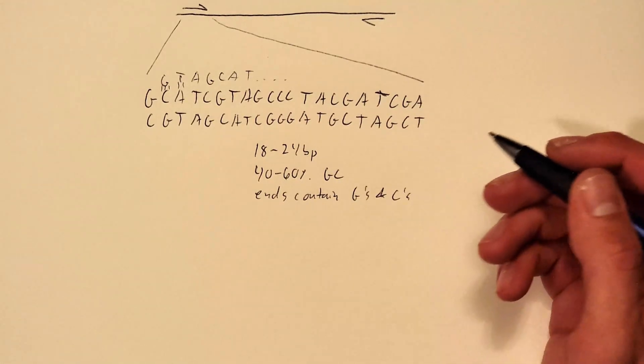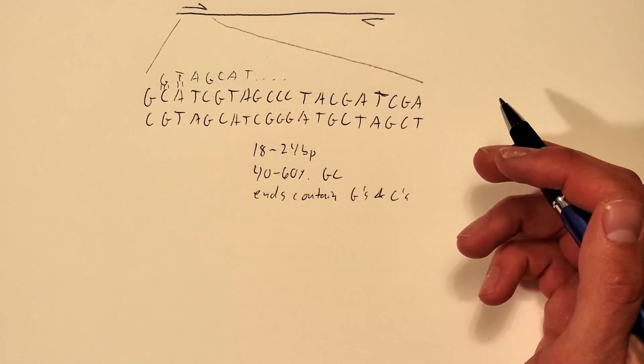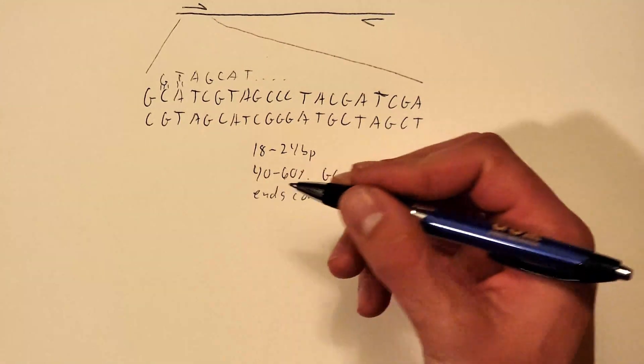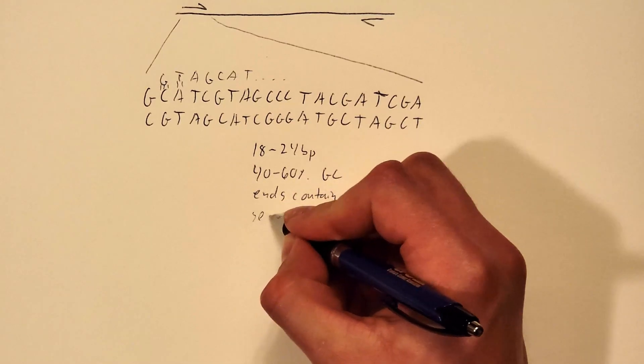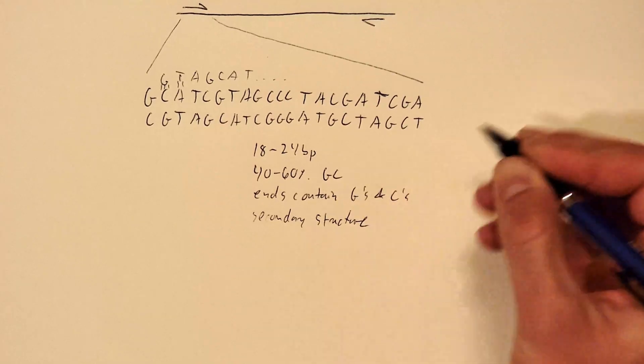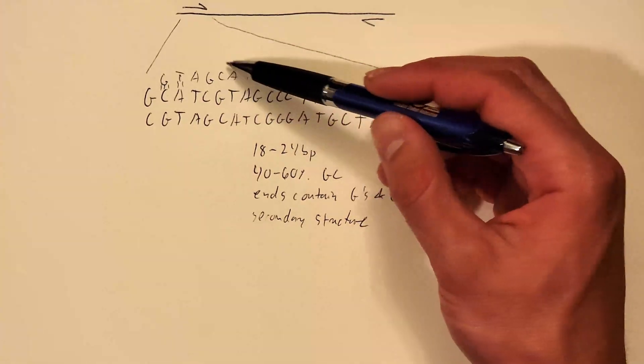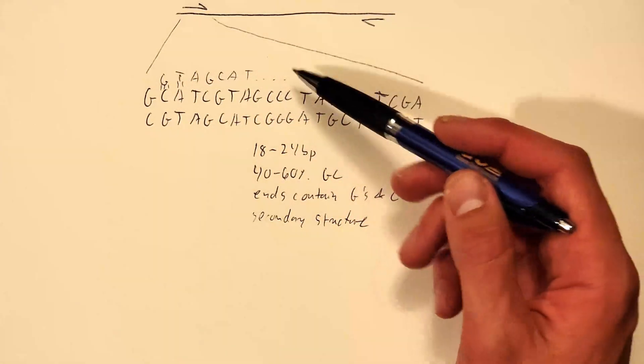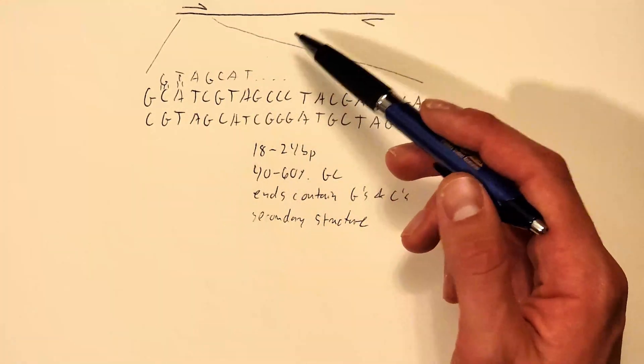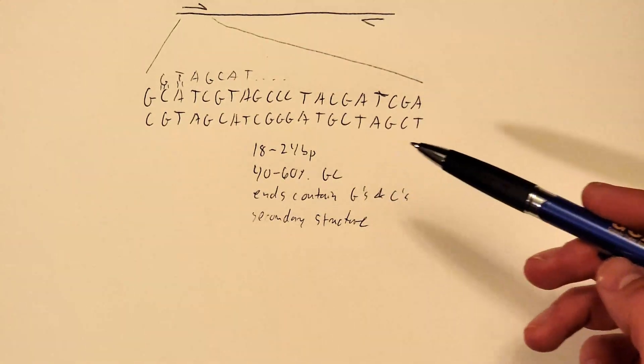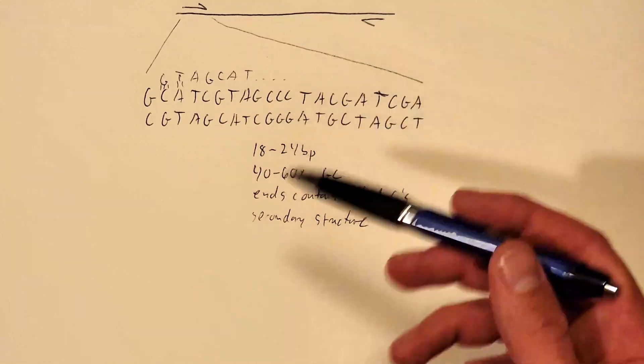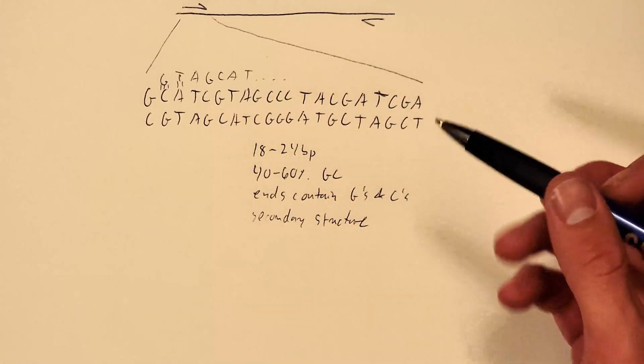So the last thing to consider that I never really consider in my real primer design that I do but it's something to think about is secondary structure. So what this means is that potentially the primer that you design could bind to itself in some strange way. So there are tools online to double check that you don't have any secondary structure but for me personally I've never had any issues with that.